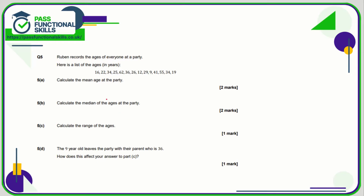Question number 5 — we want the mean age. We're going to add up all of these ages and divide by 14 because there are 14 people at the party. When you add up all the ages they come to 420, and 420 divided by 14 is 30. So 30 is the mean age.